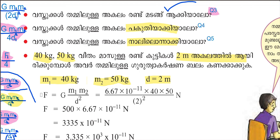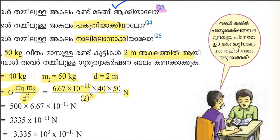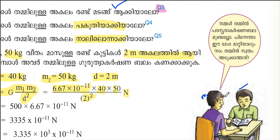Let's take a look. F equals Gm1m2 by d squared. G is the gravitational constant, m1 equals 40 kg, m2 equals 50 kg. The unit is Newtons. Let's take a look on the right side: m1, m2, and d equals 2 meters.